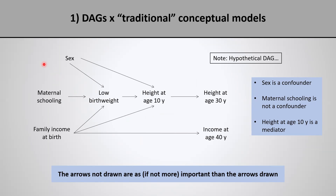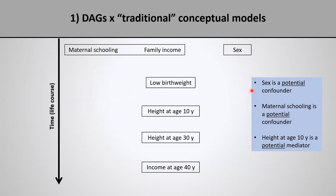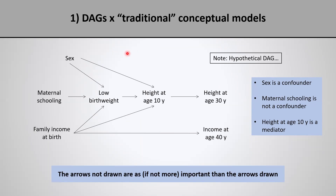Now let's consider a DAG about the same example. Please keep in mind this is just a hypothetical DAG for illustration purposes — we might disagree about some of the arrows drawn or not drawn. Notice that in our DAG, sex is a direct cause of low birth weight and a direct cause of height at age 10, which causes height at age 30. Therefore sex is a confounder, because it causes both the exposure and the outcome independently of the exposure. So here the DAG says that sex is indeed a confounder — whereas in the previous model sex was only a potential confounder.